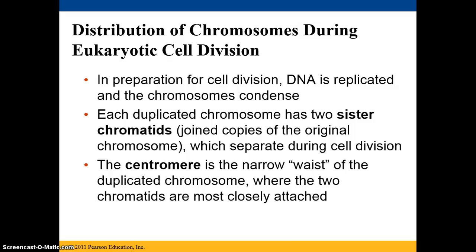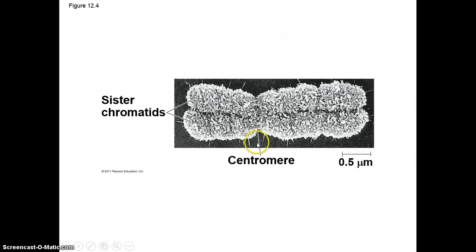In preparation for cell division, the DNA is replicated so we can have an exact copy, and then the chromosomes begin to condense. Each duplicated chromosome has two sister chromatids — each side of the X shape is a chromatid, and because they are joined together we call them sister chromatids. They are joined copies of the original chromosome that will separate during cell division. The centromere is the point of attachment, or narrow waist, of the duplicated chromosome where the two chromatids are most closely attached.